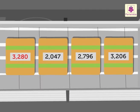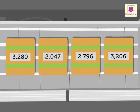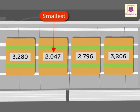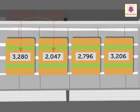Let us arrange the numbers three thousand two hundred eighty, two thousand forty seven, two thousand seven hundred ninety six, and three thousand two hundred six in the ascending order. To do that, we first identify the smallest and the greatest numbers. The smallest number is two thousand forty seven and the greatest is three thousand two hundred eighty.